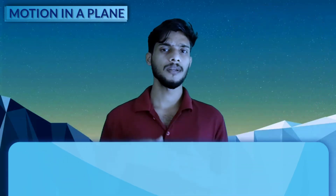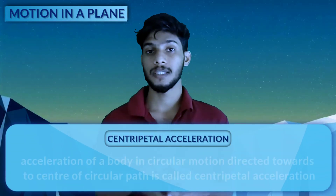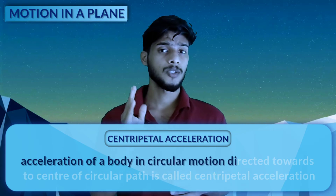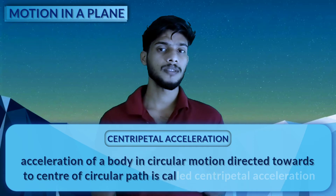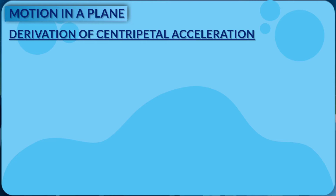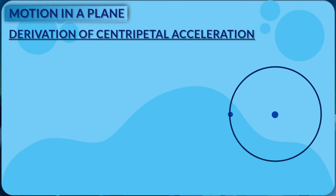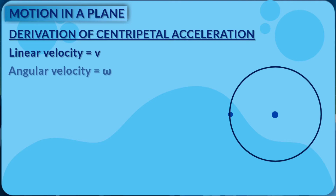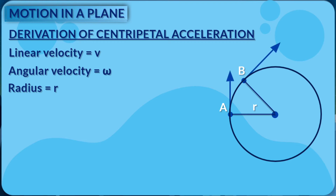Centripetal acceleration: when a body is in circular motion, the acceleration is directed towards the center of the circular path — that is called centripetal acceleration. For a body moving with linear velocity V and angular velocity omega on a circular path of radius R, the linear velocity is tangential to the path.